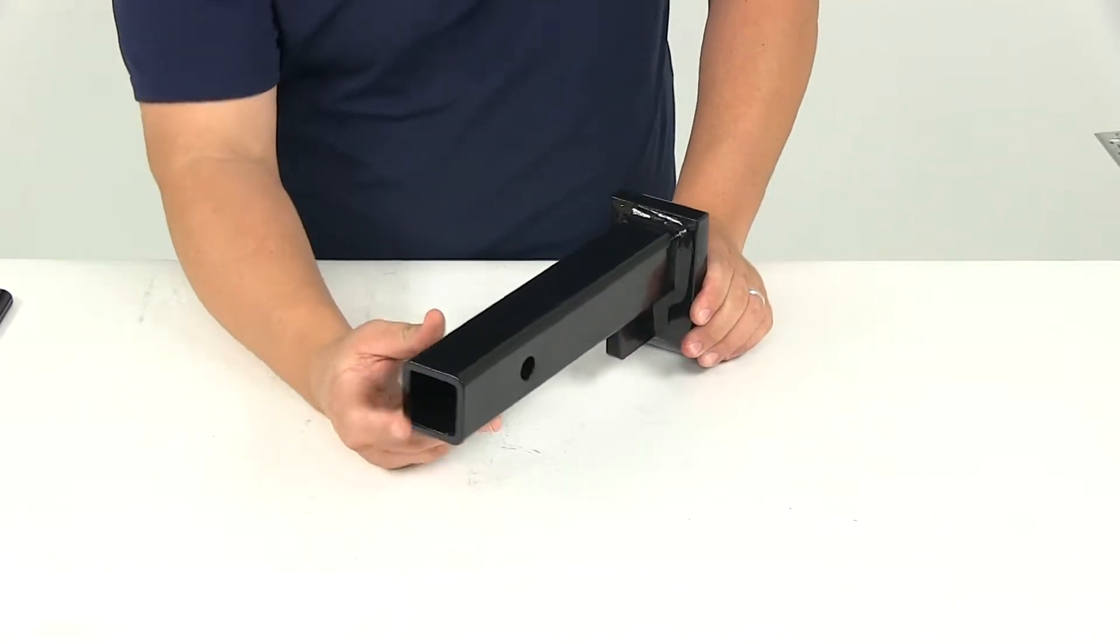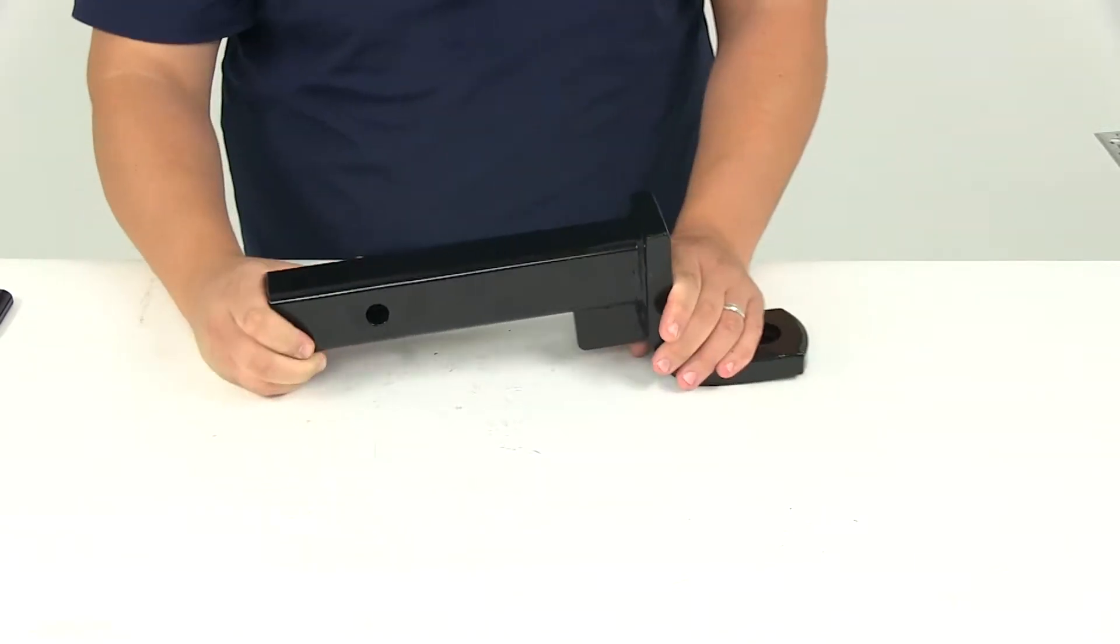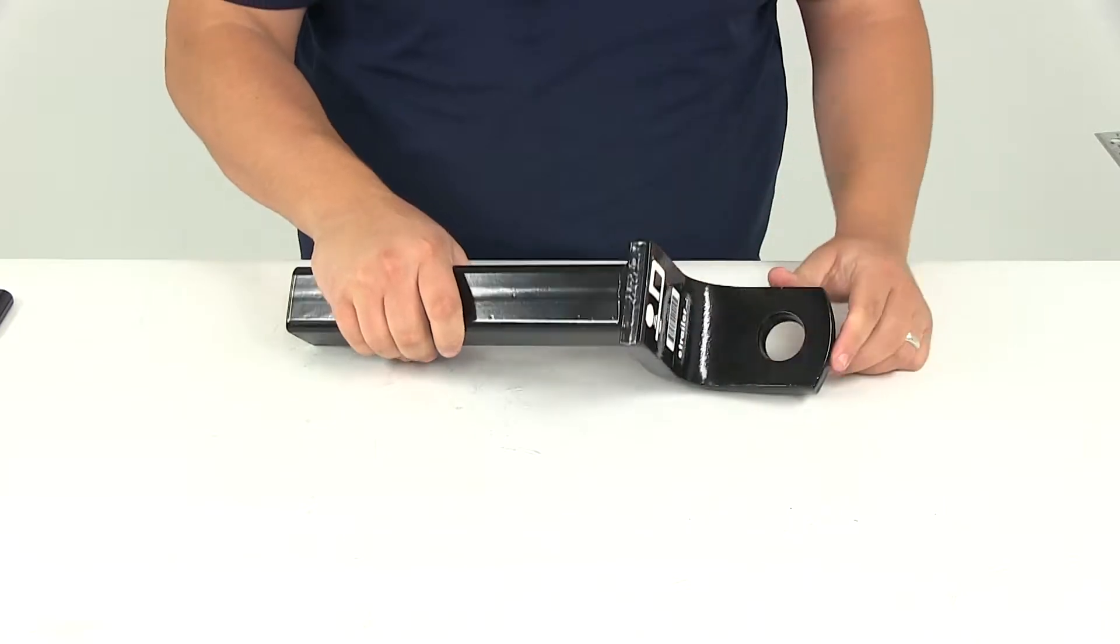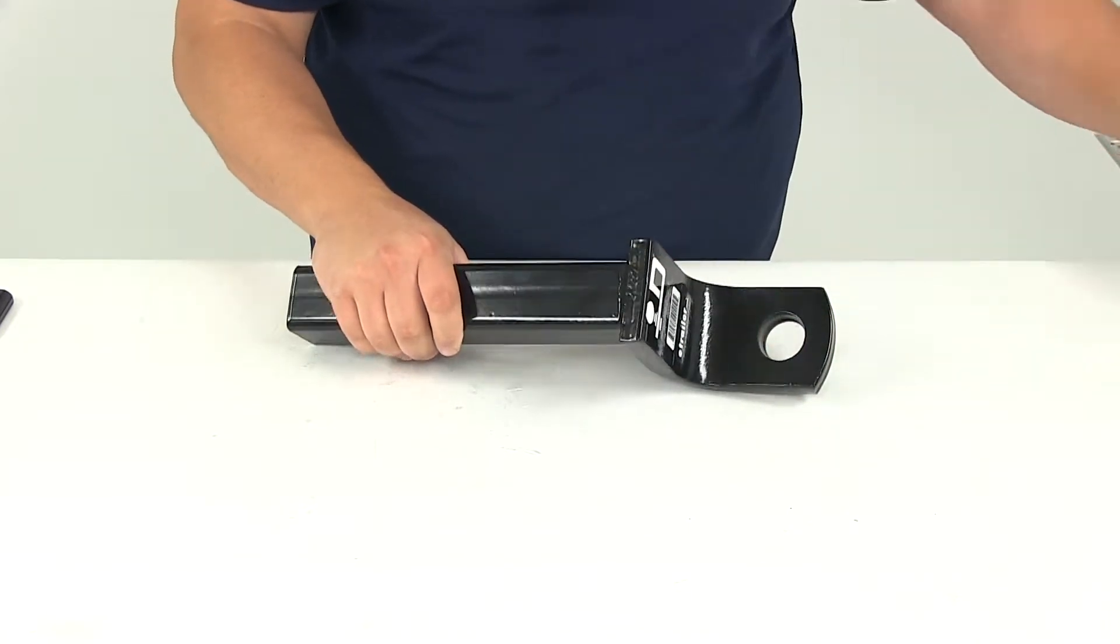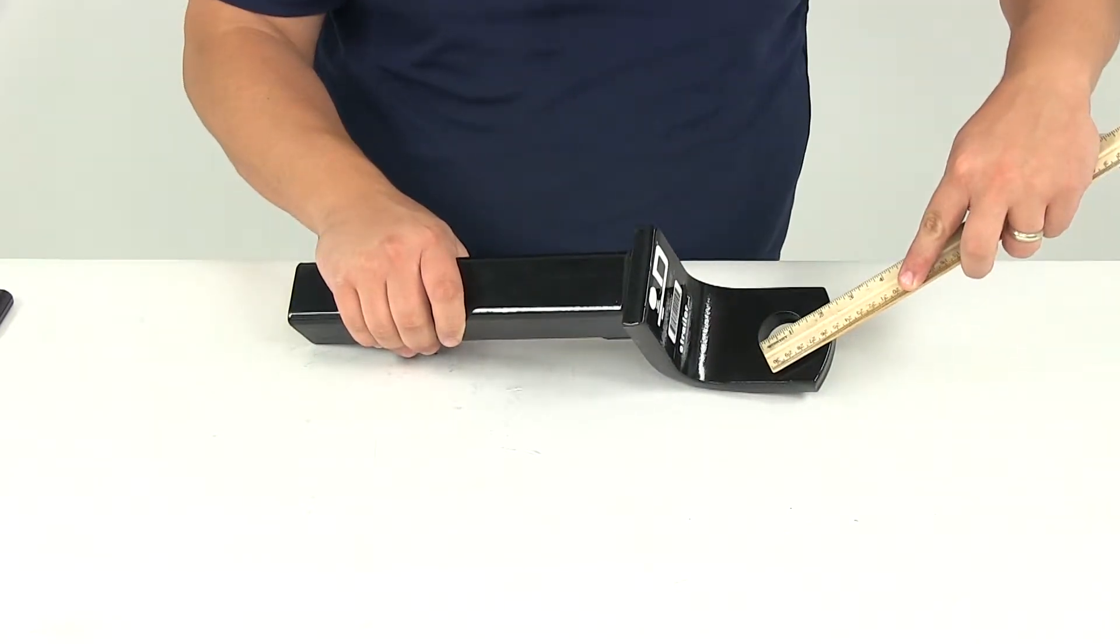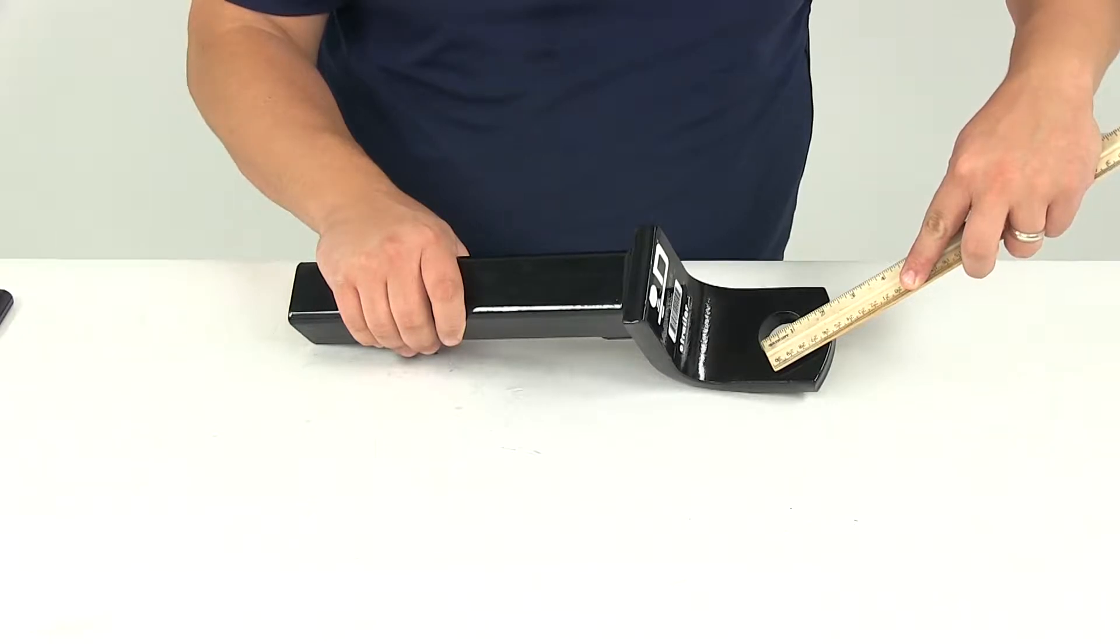We see here on the back side it's a hollow shank. When choosing a hitch ball you want to make sure that the shank of the hitch ball does not exceed the ball hole diameter. For this particular mount it's going to give us a ball hole diameter of an inch and a quarter.